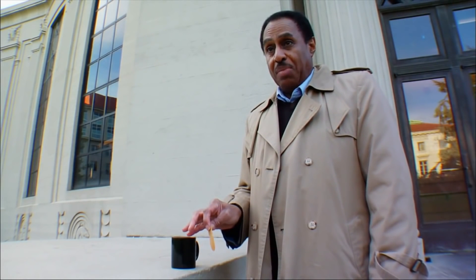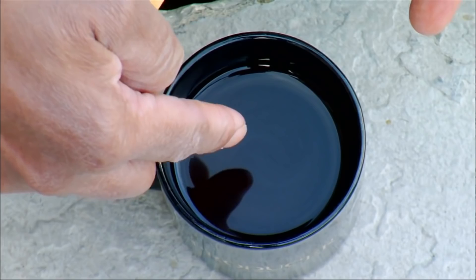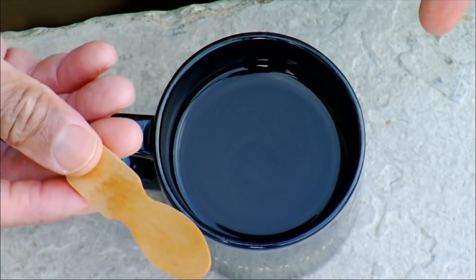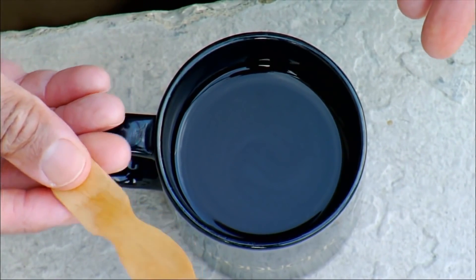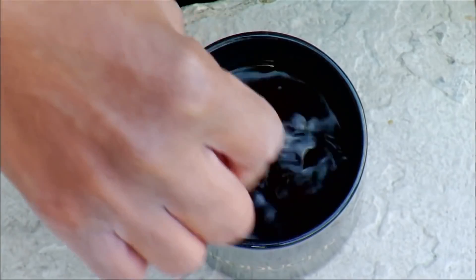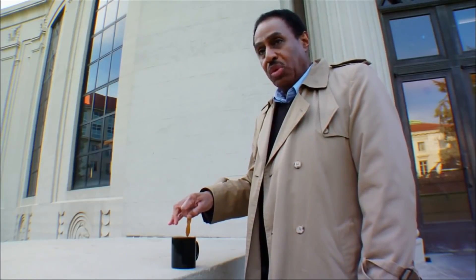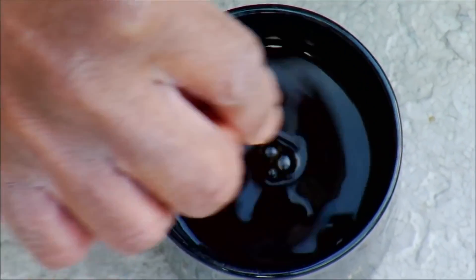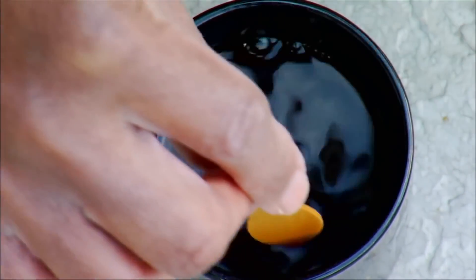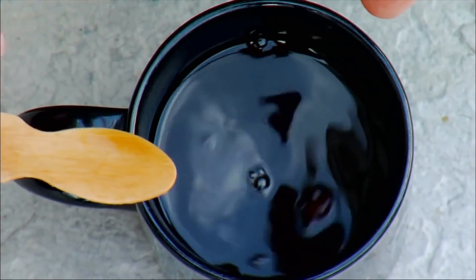We can understand how a circulating light beam can twist space and time by a simple analogy with a cup of coffee. If we think of the coffee and the cup as being like empty space and we think of the spoon as being like a circulating light beam, then you can see what happens to the coffee as I stir it. The coffee swirls around. Well, that's what the circulating light beam is doing to empty space.